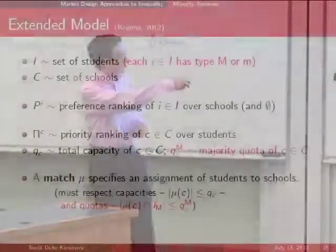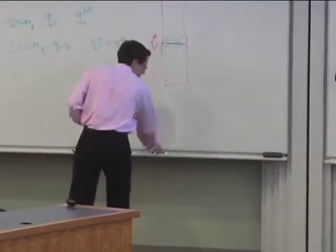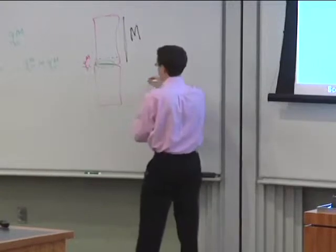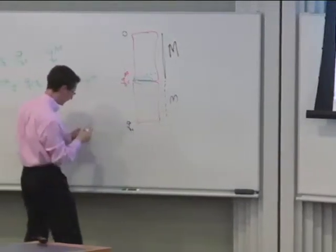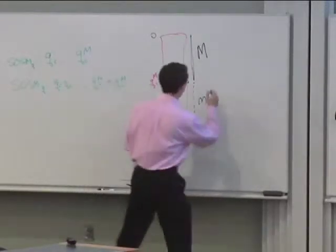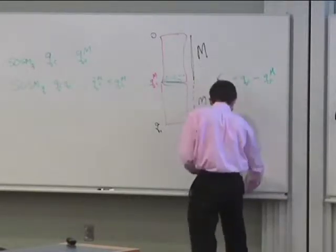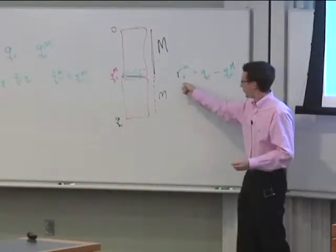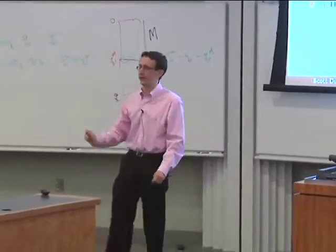Now we build out the model with minority reserves. Previously we had majority quotas that had to be respected. Now we also have minority reserves. The natural relationship: the reserve r_c^m equals q_c minus q_c^M — the total capacity minus the majority quota we were trying to set. This will completely fix the problem we just observed.